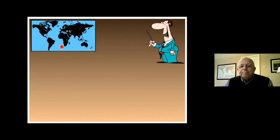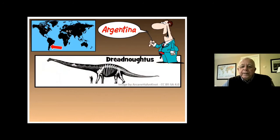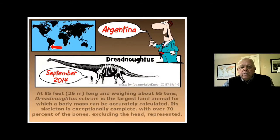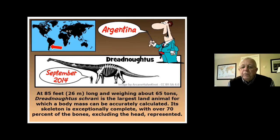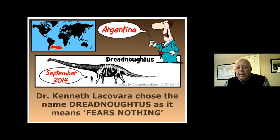Argentina — Dreadnoughtus, September 2014: at 85 feet long and weighing about 65 tons, Dreadnoughtus schrani is the largest land animal for which a body mass can be accurately calculated. Its skeleton is exceptionally complete, with over 70 percent of the bones — excluding the head — represented. Dr. Kenneth Lacovara chose the name Dreadnoughtus because it means 'fears nothing.' A creature as massive as that, you'd think it would fear nothing.